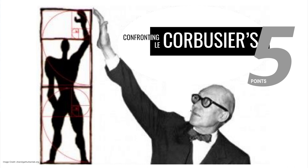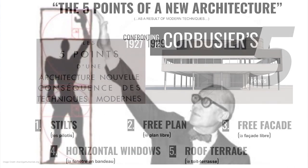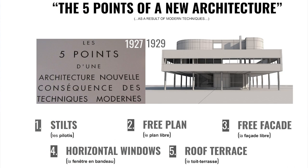The five points of a new architecture is what Corbusier framed in 1927. If you read the French and can imagine the translation, it's the five points of a new architecture as a consequence for modern techniques.